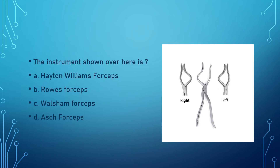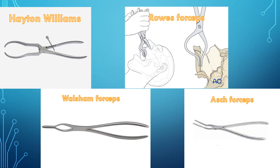The next question asks to identify the instrument shown — the options were Hayton Williams forceps, Rowe's forceps, Walsheim forceps, or Ash forceps. The answer is Rowe's forceps. These are maxillary forceps used for maxillary disimpaction in case of Le Fort fractures. They always come in pairs — right and left — because they are used for both right and left maxilla.